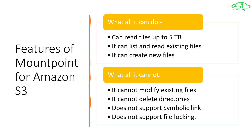It is also very important to understand what all it cannot do, so that you can decide whether Mount Point for Amazon S3 is the tool you want to use. It cannot modify existing files. It cannot delete directories, which is very important to understand. It does not support symbolic links or paths to a different directory or file, and it does not support file locking. Because it does not support file locking, it cannot determine who is writing at which time. Therefore, it is a suitable tool for applications which have sequential reads to your workload.